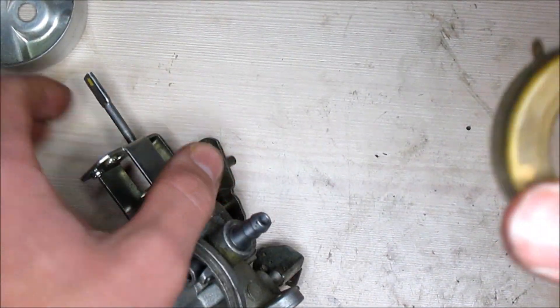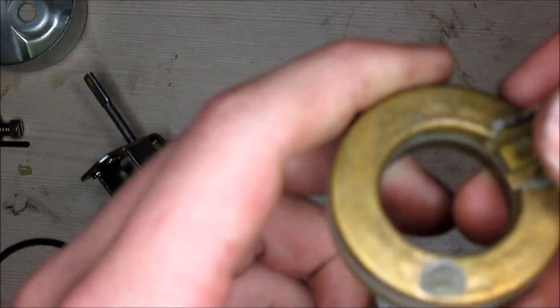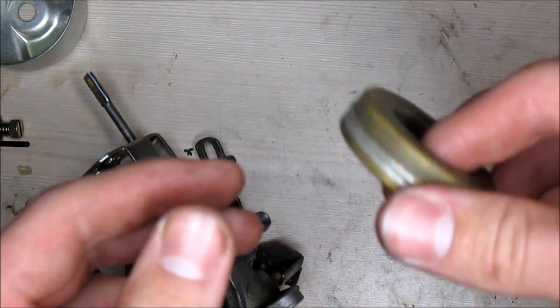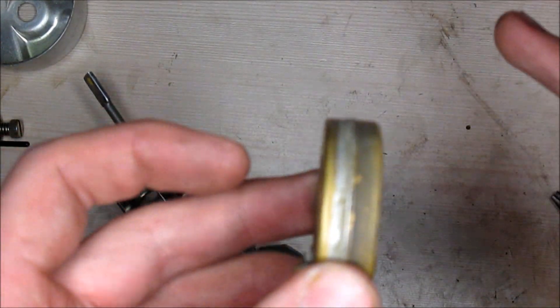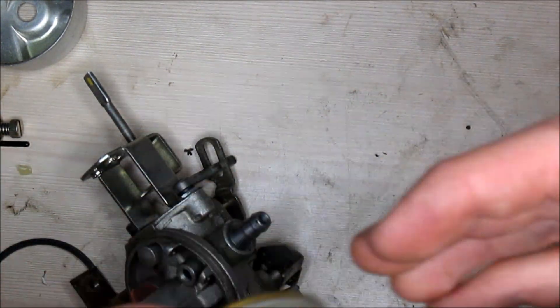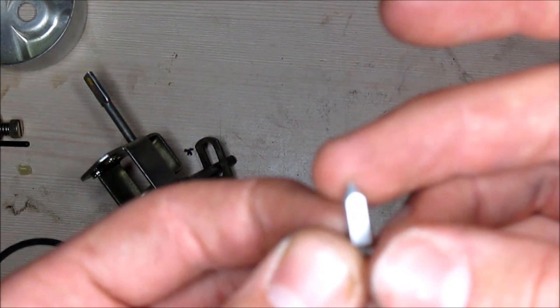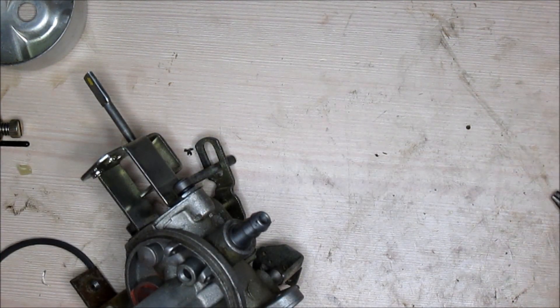And then your float should arise out of the carburetor. You can go ahead and shake it. If there is no fluid in it, the float itself is still good. Go ahead and put that aside. And if your needle is clean, which in this case it is, you can go ahead and put that back as well.